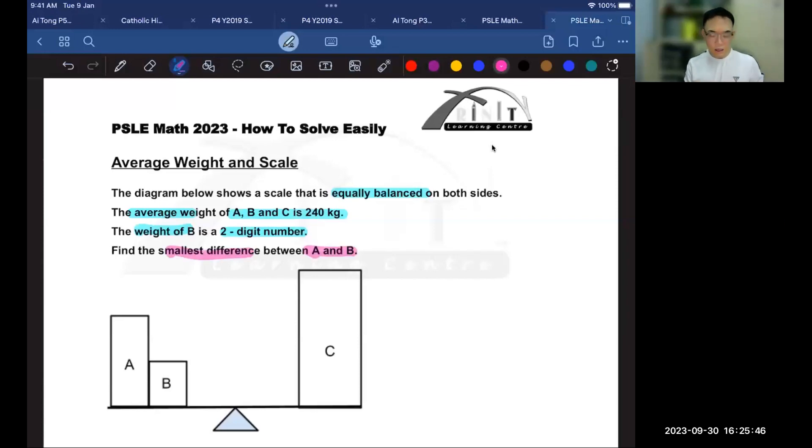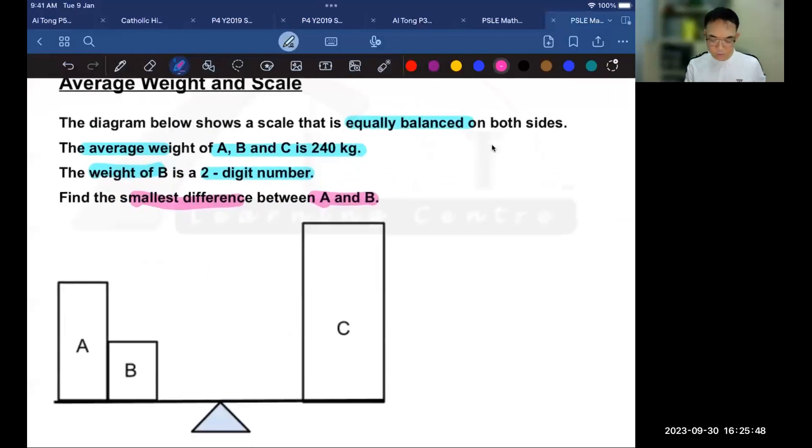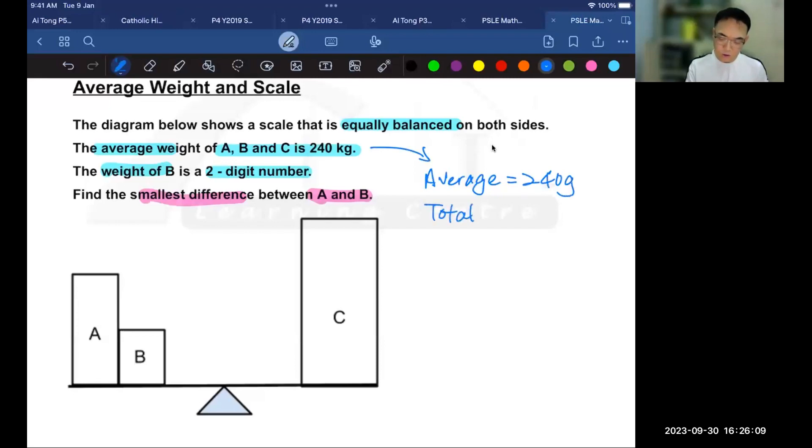Since they're giving us the average, our goal is to first find the total weight of all three items A, B and C. Since A, B and C have an average of 240 grams, how do I find their total?